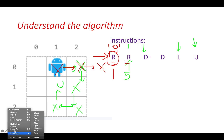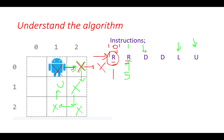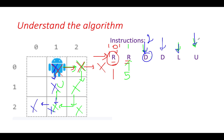For the next iteration starting from index 2, the first instruction is D so the robot moves down, then D again, then L moving left, then U moving up. The robot successfully executed 4 instructions, so the answer for index 2 is 4.